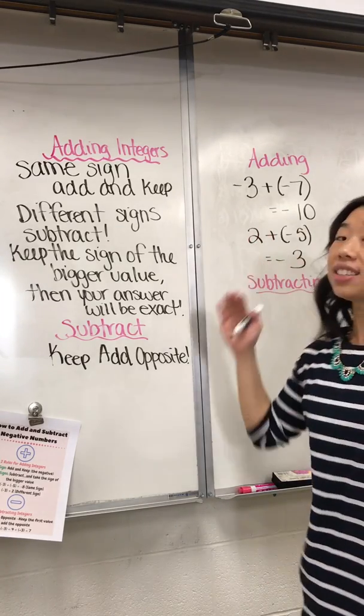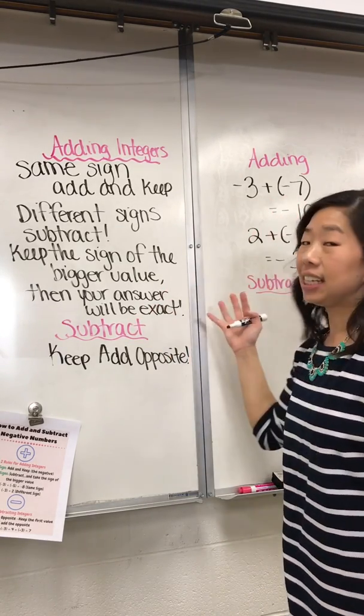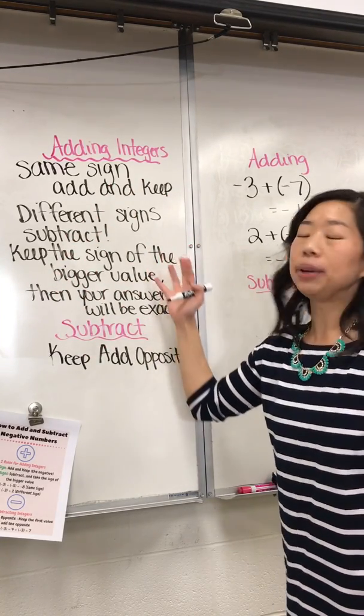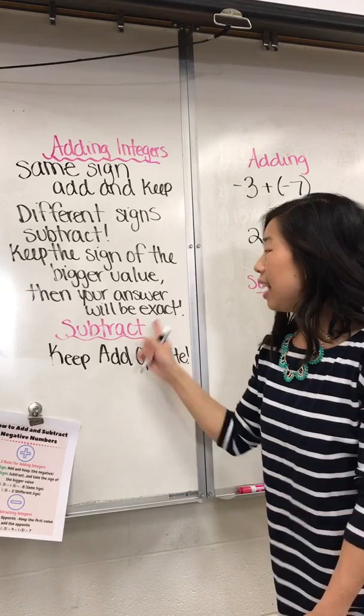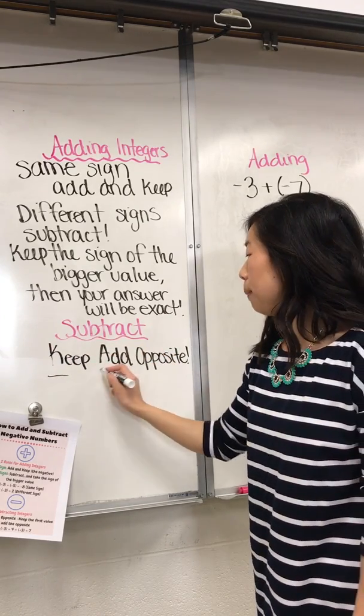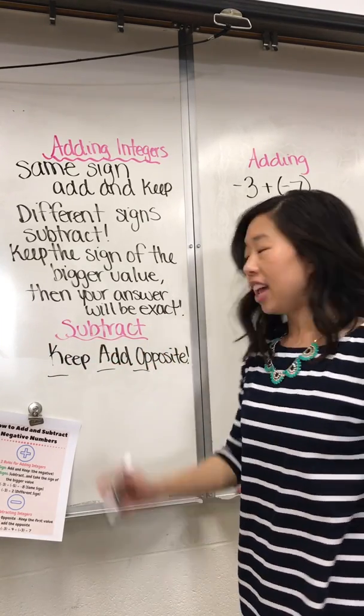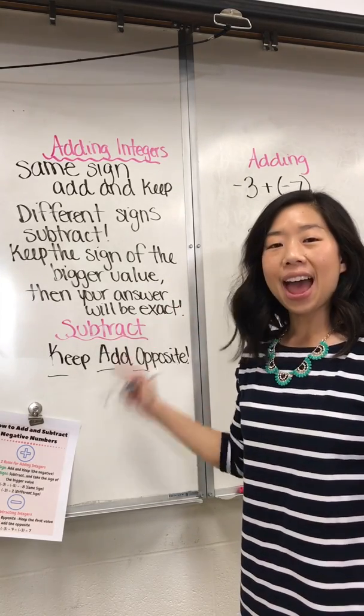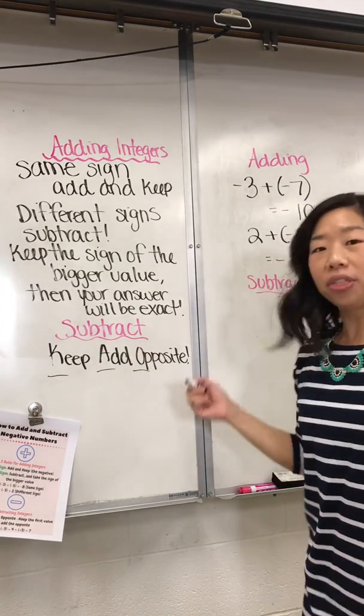Those are some quick examples of how I teach adding integers. This is a super fun way to help kids remember how to do it. Now, subtract. All you have to remember is these three letters: K, A, O. It stands for keep, add, opposite. What does that mean?